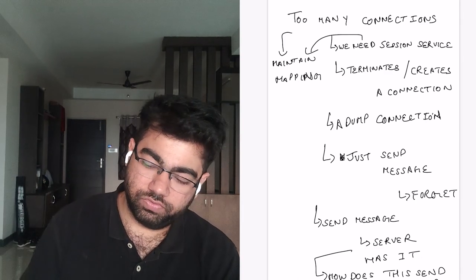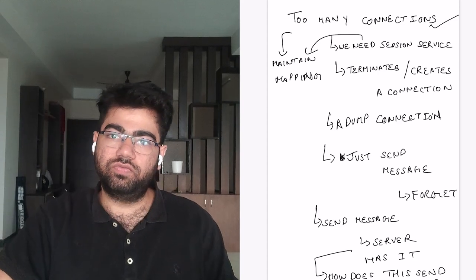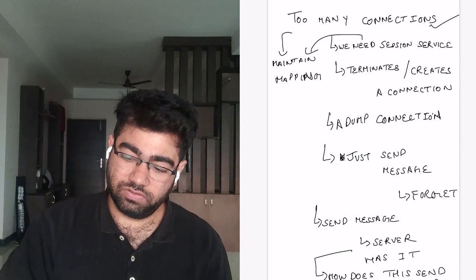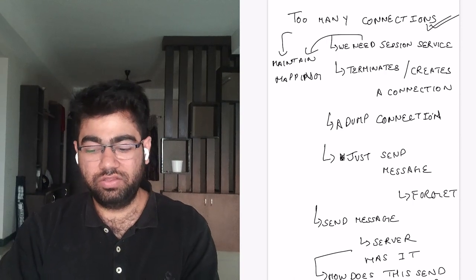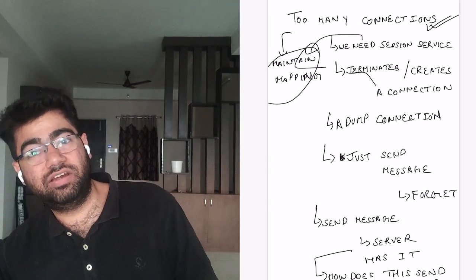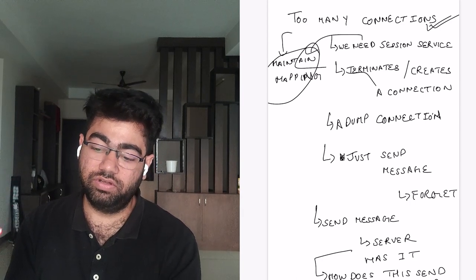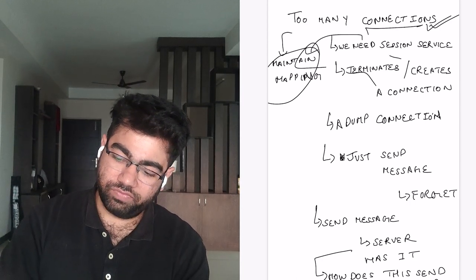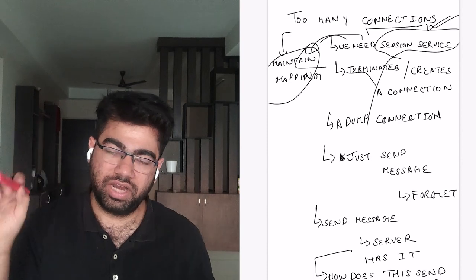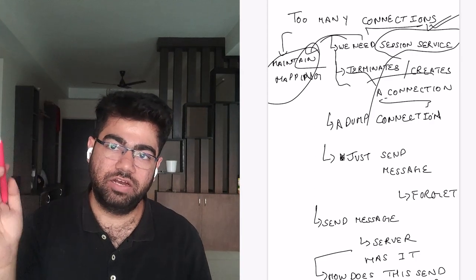Another issue is too many connections. There are millions of users connected to a finite number of servers, all sending messages, so there are too many connections to manage. The mapping table itself becomes enormous. To address this, we need a session service. The session service maintains and synchronizes this mapping. We also need to terminate connections that have been idle for a long time, to limit the total number of open connections.